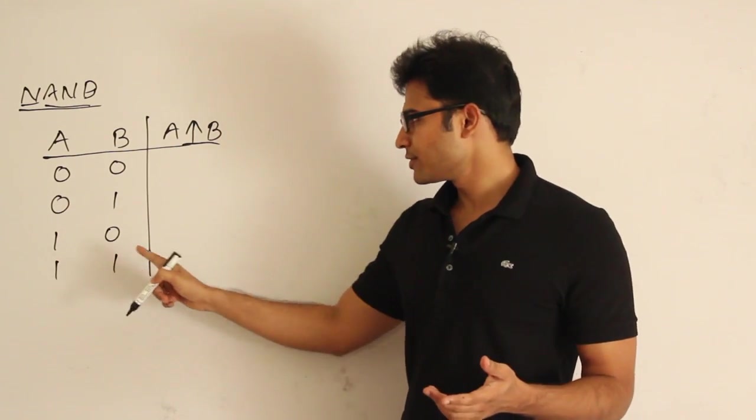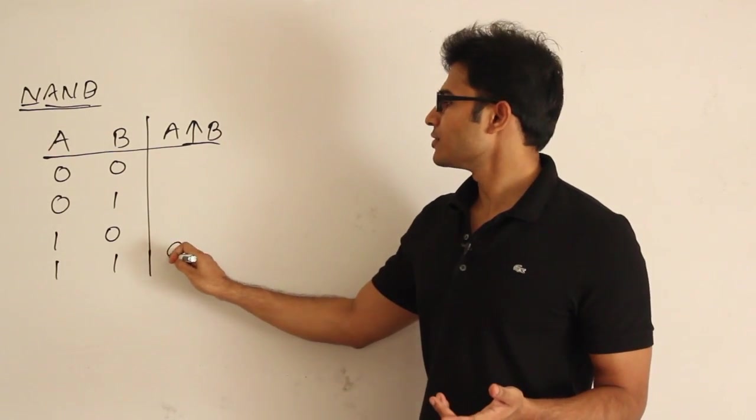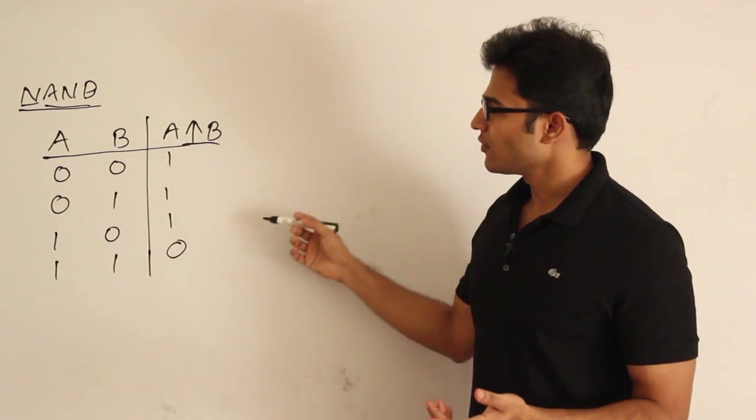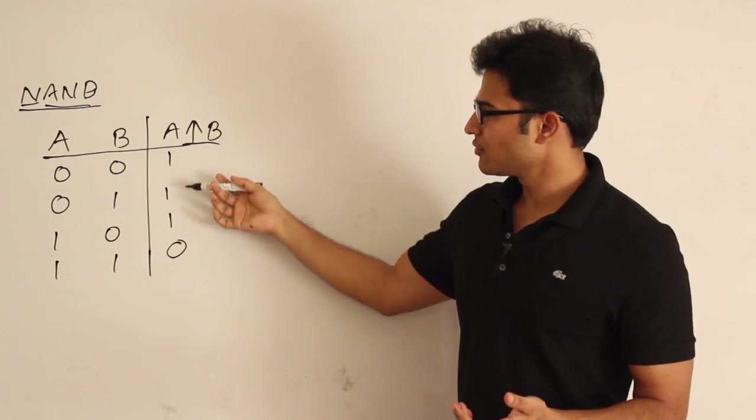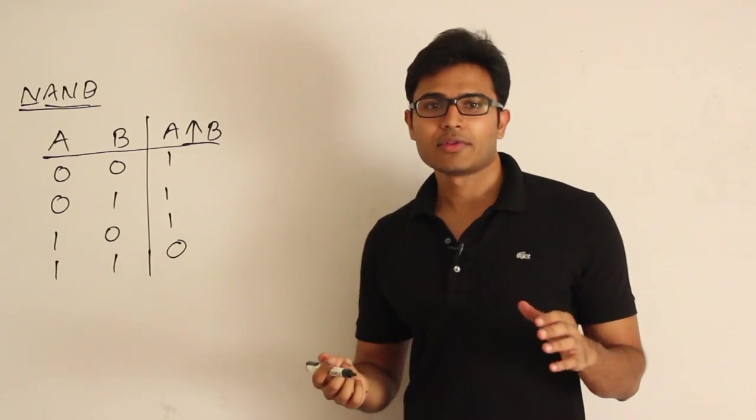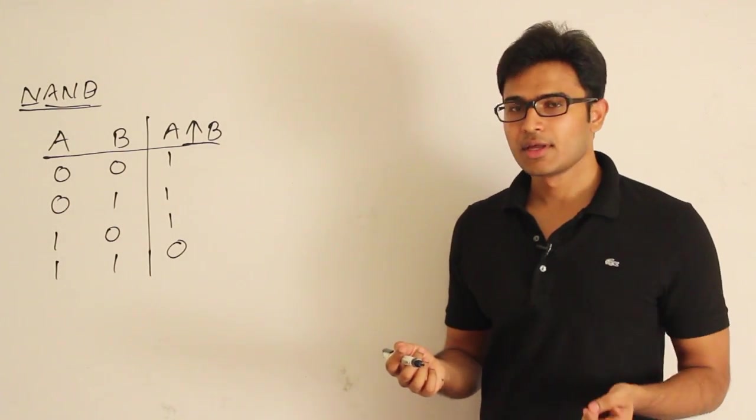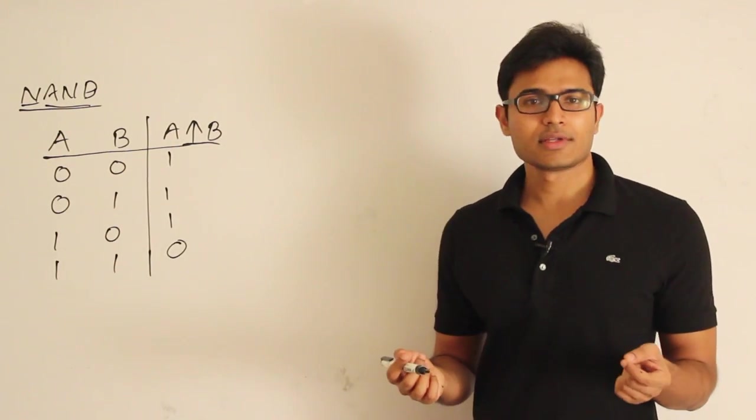AND will give only one for this case, so NAND will behave the opposite way: 0, 1, 1, 1. Wherever AND has given 0, NAND will give 1. That is how NAND works, and it is a very important gate in the construction of circuits. Now let's see what properties NAND will follow.